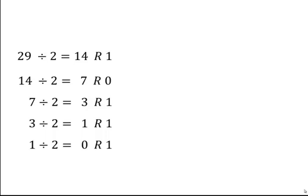Remember that binary numbers are just a mixture of 0s and 1s. It's these remainders which tell us what the binary equivalent of 29 is going to be.